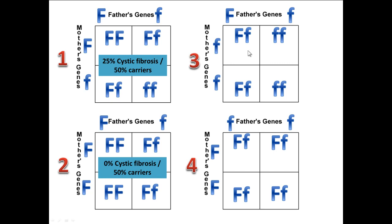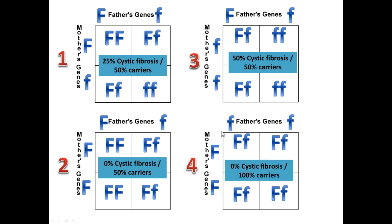In scenario three, the father is a carrier and the mother actually has cystic fibrosis. Following this through, 50% of the kids would have cystic fibrosis and 50% would be carriers. In another scenario, the mother is homozygous dominant and the father has cystic fibrosis — none of the kids would have cystic fibrosis, but they would all be carriers.